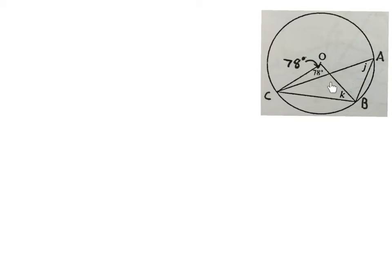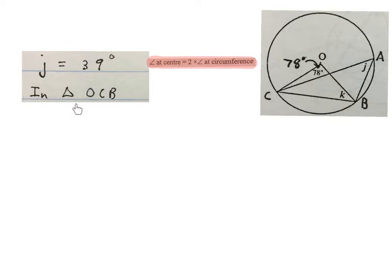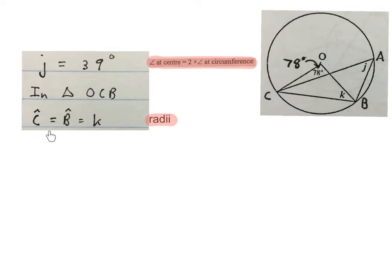Because OC and OB are radii, the angles opposite them will be equal. The 78° is the angle at the center, which is twice as big as the angle at J. So J is equal to 39 degrees — the angle at the center is two times the angle at the circumference, so we halve this value to get the angle at the circumference.